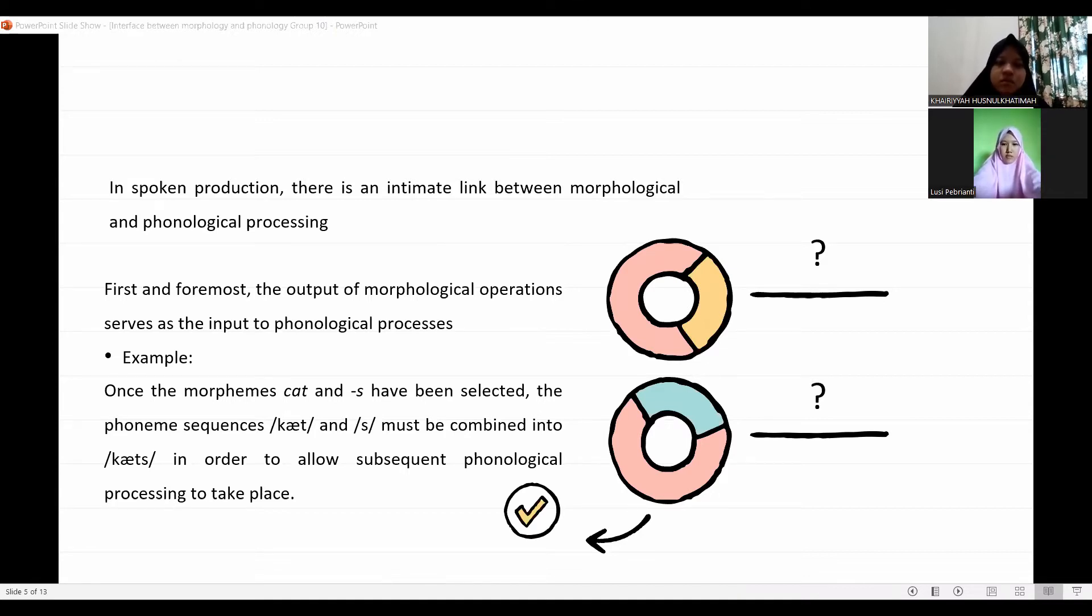When morphological processes combine lexical representations, morphemes, to form a multi-morphemic word, the constituent sounds must also be combined such that the resulting phonological representation is suitable for driving spoken production. For example, once the morphemes have been selected, the phoneme sequences must be combined in order to allow subsequent phonological processing to take place.